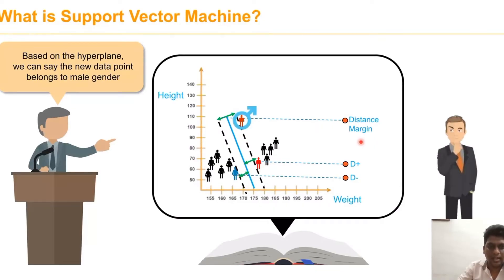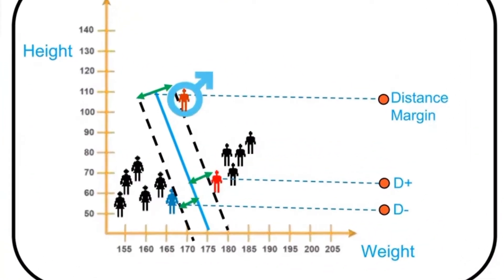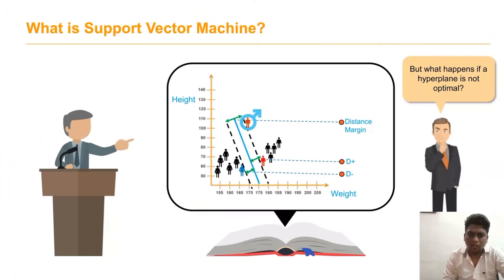Based on that hyperplane, we can say the new data point belongs to the male gender. One question to be noted is: what happens if the hyperplane is not optimal?